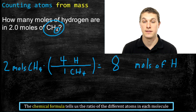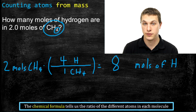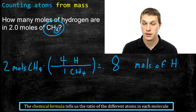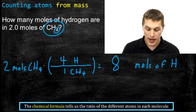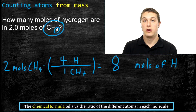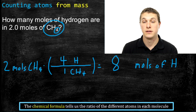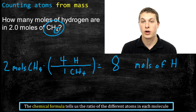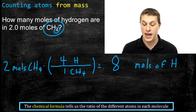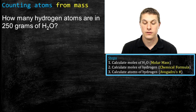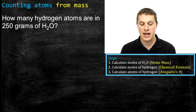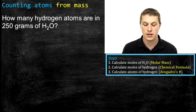That makes sense: if I have two moles of CH4, I have eight moles of hydrogen — four moles of hydrogen for each mole of methane. That's a simple one-step process using a chemical formula as a conversion factor. Now we'll use it in a more complicated case: how many hydrogen atoms are in 250 grams of water?